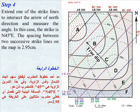Step 4. Extend one of the strike lines to intersect the arrow of north direction and measure the angle. In this case, the strike is North 45 degrees East. The spacing between two successive strike lines on the map is 2.95 centimeters.